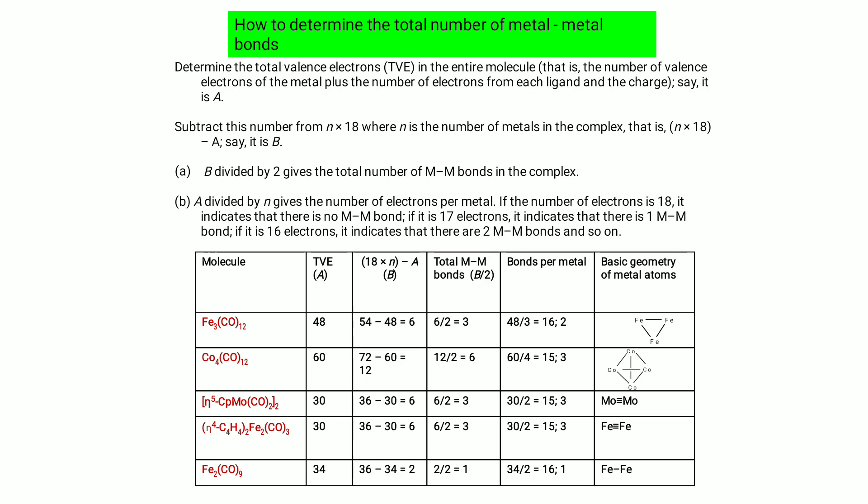Third molecule: total valence electrons = 30, two metal atoms. 18 × 2 = 36; 36 − 30 = 6; 6 ÷ 2 = 3 total metal-metal bonds — linear geometry. Fourth molecule (two iron atoms, Fe₂): total valence electrons = 30. 18 × 2 = 36; 36 − 30 = 6; 6 ÷ 2 = 3 total metal-metal bonds — linear geometry.